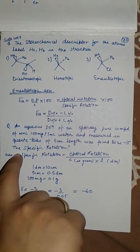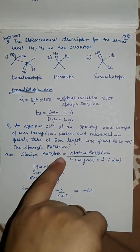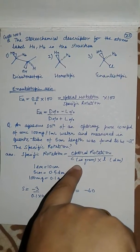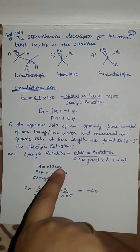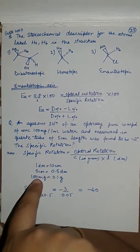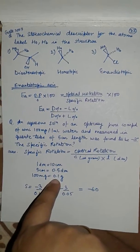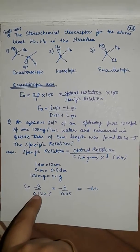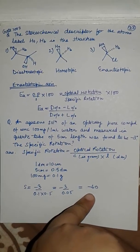So specific rotation formula is optical rotation upon concentration in grams times length in decimeter. We know one decimeter is 10 centimeters, so 5 centimeter length will be 0.5 decimeter, and 100 milligram concentration is converted to 0.1 grams. Now putting in the formula: s equals minus 3 upon 0.1 times 0.5, which will come out to be minus 60.